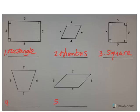Number three must be a square because both pairs of sides are parallel and it has four right angles as well as four equal sides. Number four is going to be a trapezoid because it only has one pair of sides parallel. Number five is a parallelogram since both pairs of sides are parallel. Please check and correct your answers if necessary.